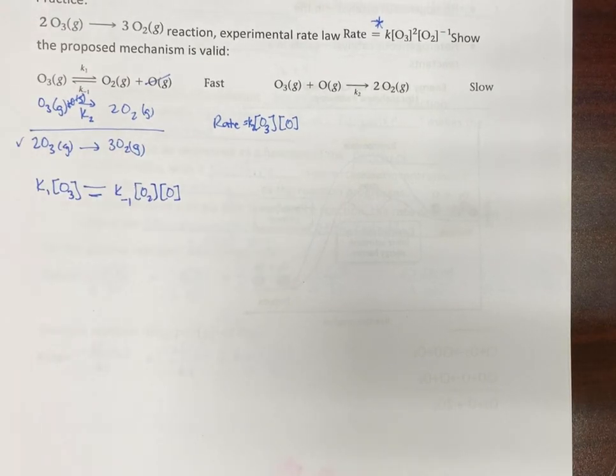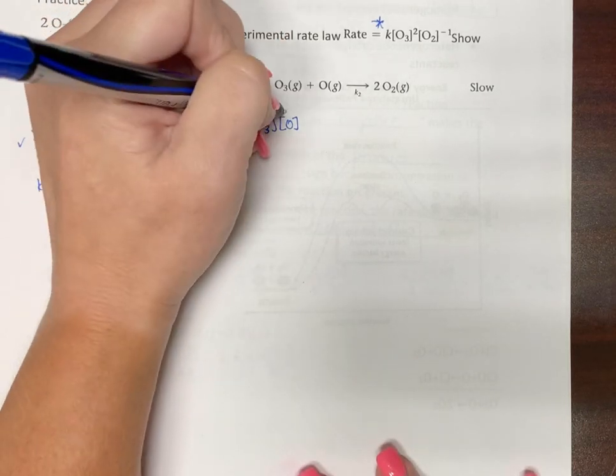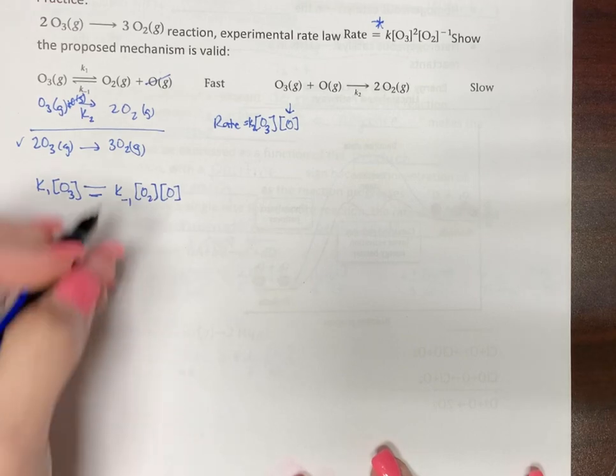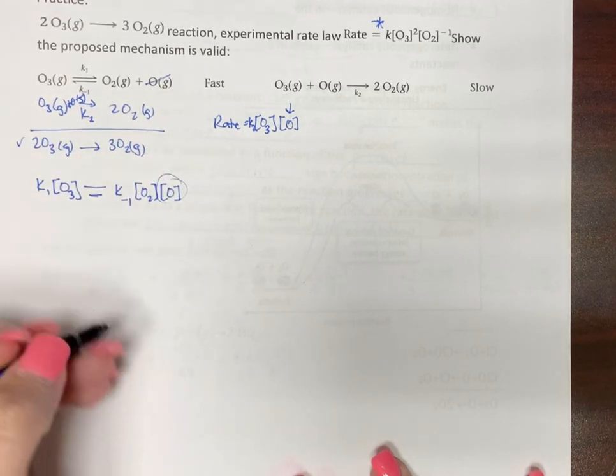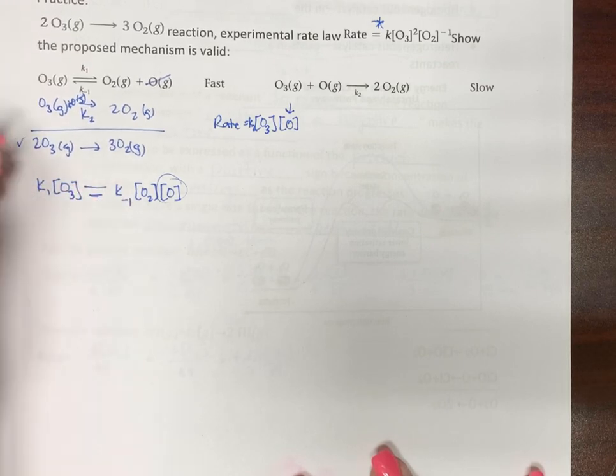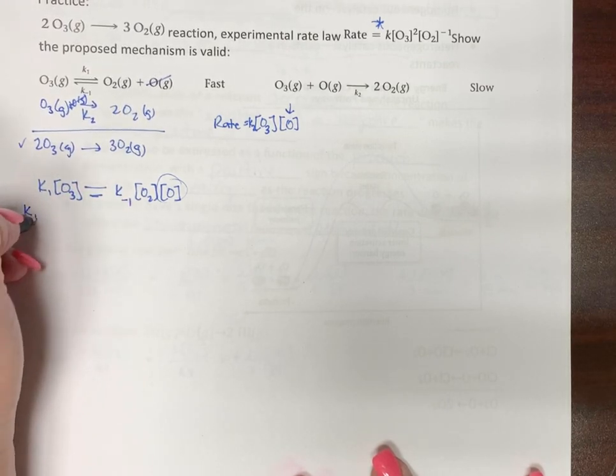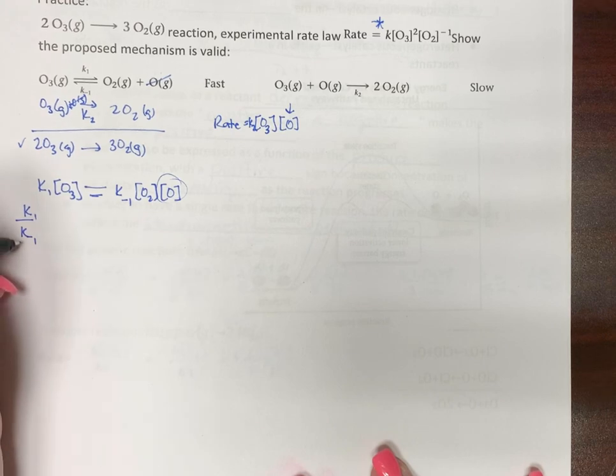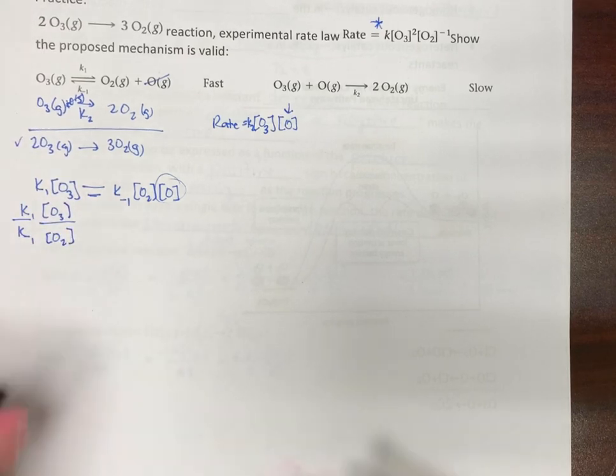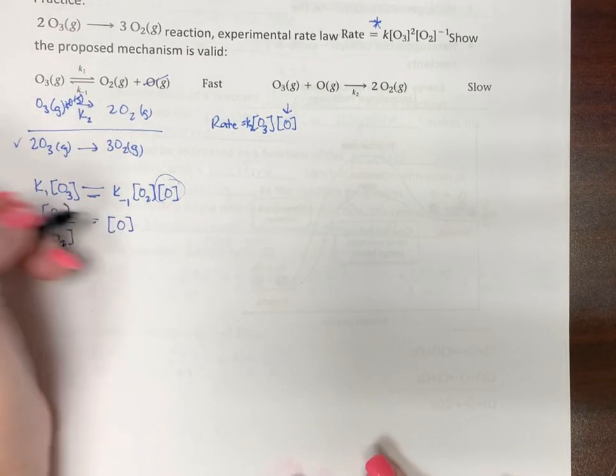Okay, so now we're trying to get rid of this oxygen. So we need to get this oxygen by itself. Okay, so this is what we're solving for. So now let's divide. So let's put our K's together. So that means K1 over K negative 1 O3 over O2 equals O.